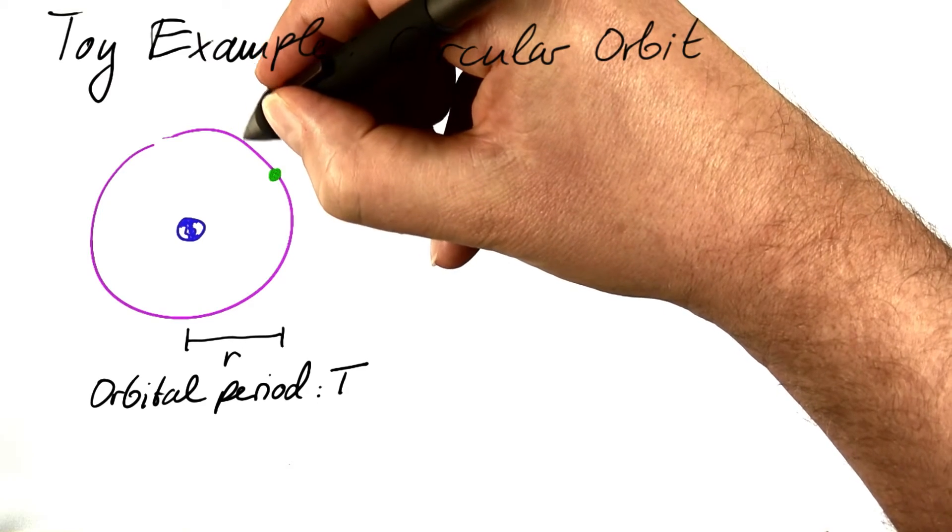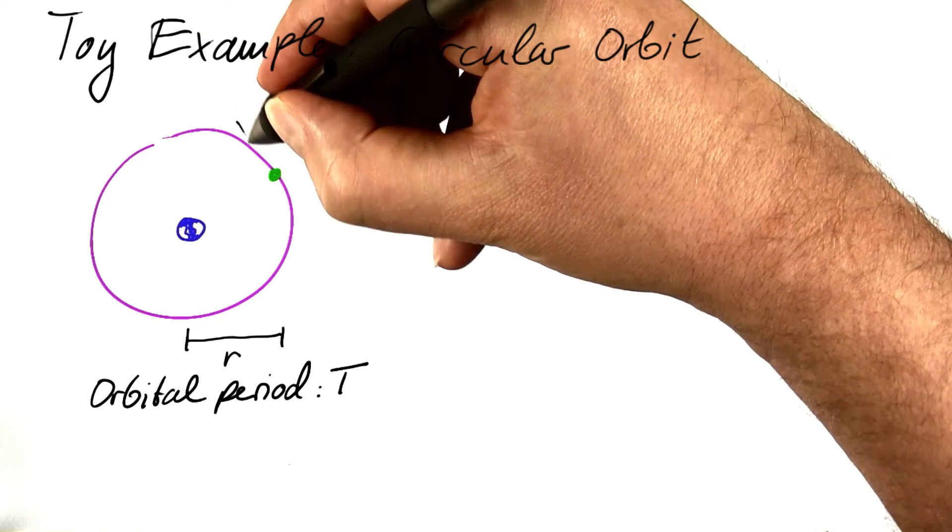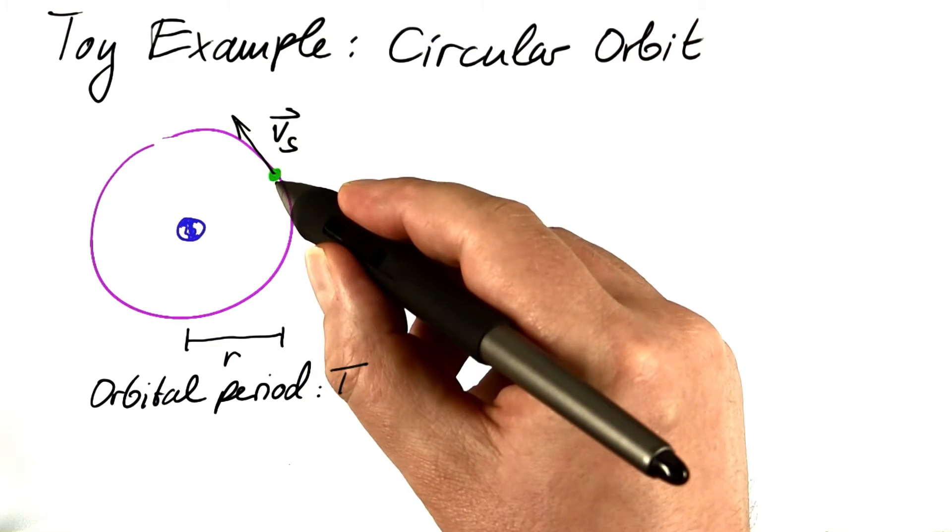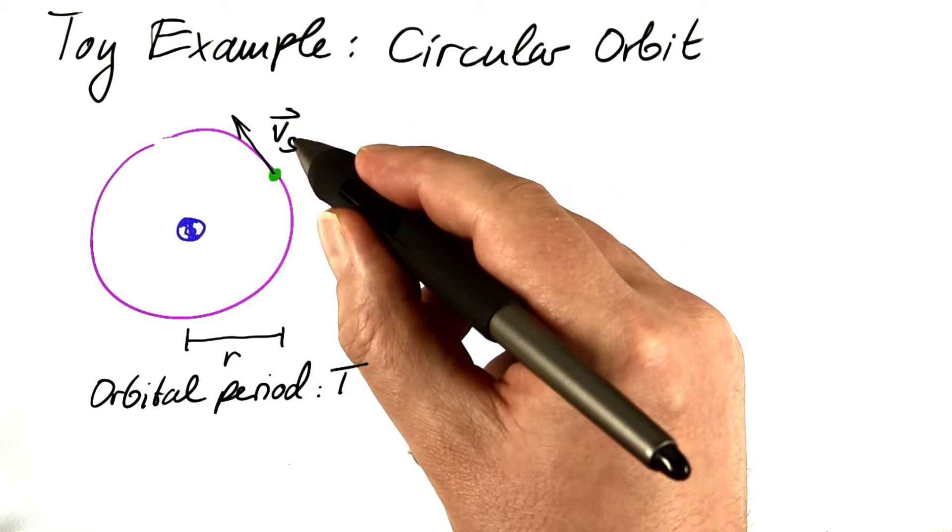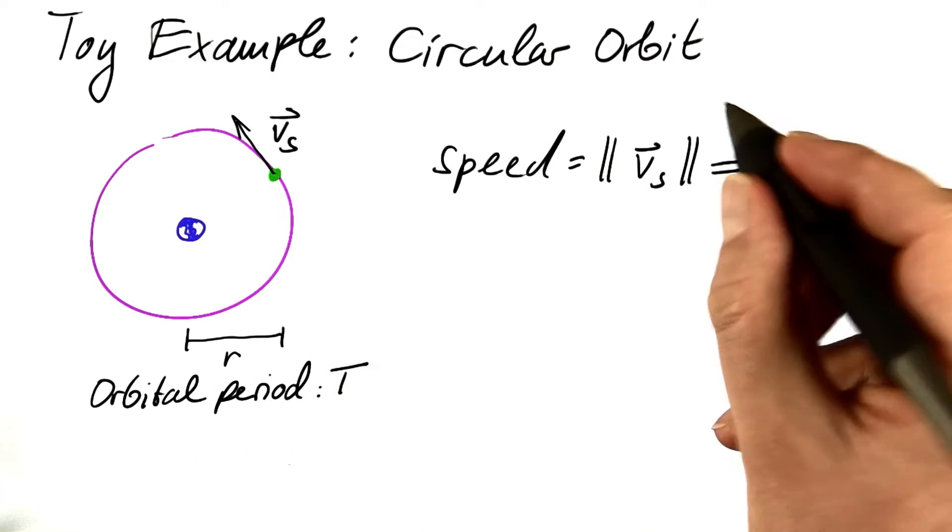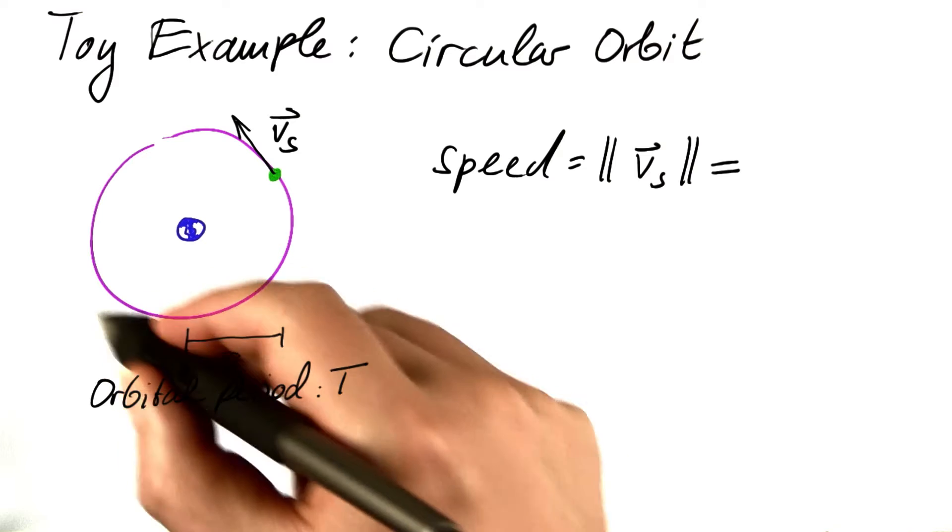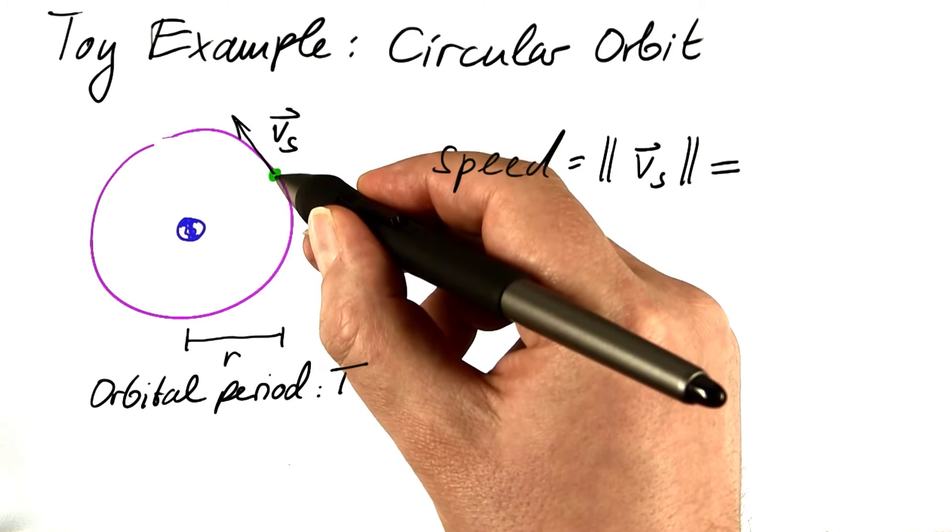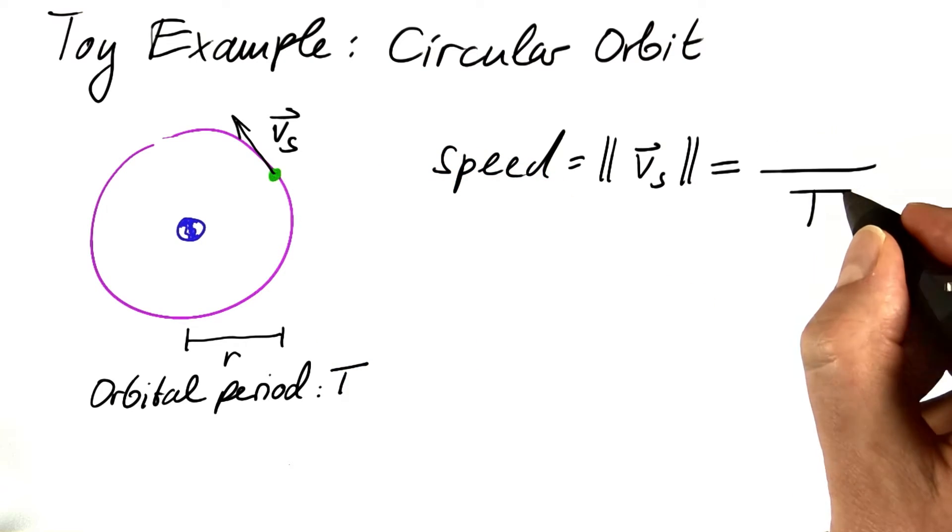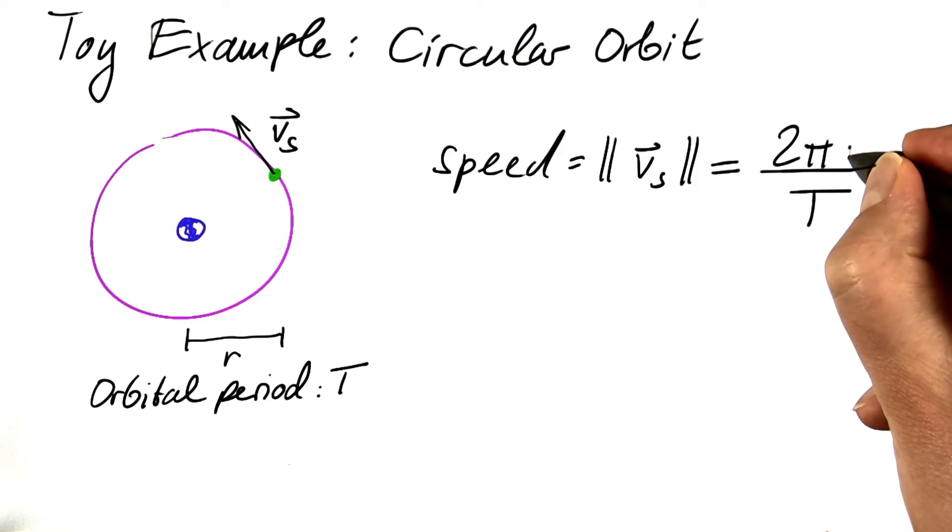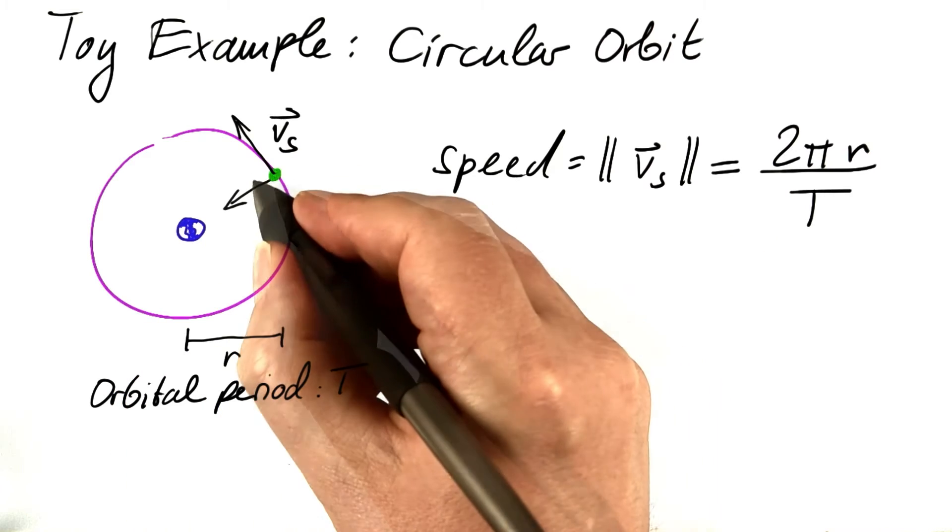The velocity vector of that spacecraft will be tangential to that orbit, and the speed, that is the length of that velocity vector, the speed will be constant. And we can easily compute the speed. It takes the spacecraft an amount of time, capital T, to go around that circumference. In the time capital T, the distance traveled by the spacecraft is 2πr, the circumference of that orbit.